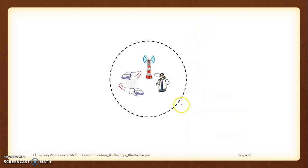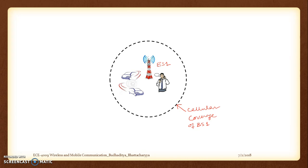So this is the cellular coverage of this particular base station. Now what we observe is that the first assumption is that a specific limited or finite region is considered to be under a particular base station. This is a very valid assumption, because if we wanted this whole region on the screen to be covered by the same base station, we would require a very large antenna and base station, which is practically impossible due to cost. Radiation hazards are also a very important issue, so it is an impractical assumption. It is much more proper to assume that a small region is covered.